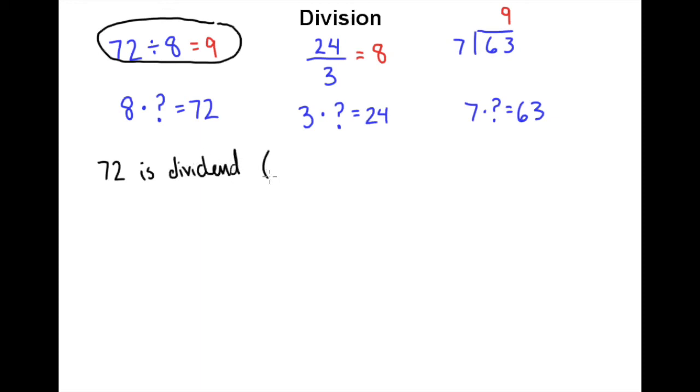So in this example 72 is the dividend. And that dividend is just the number that is being divided.